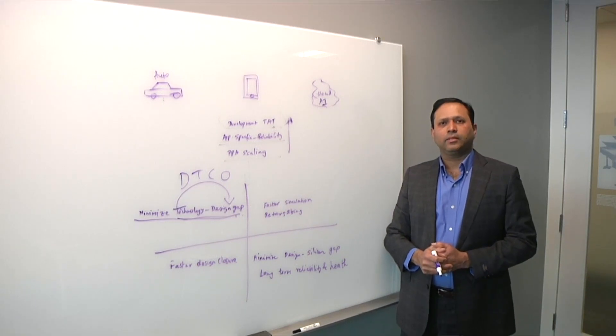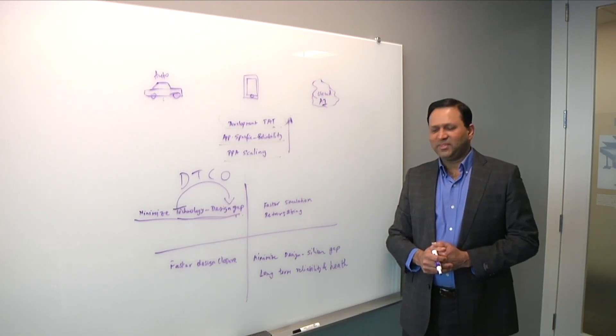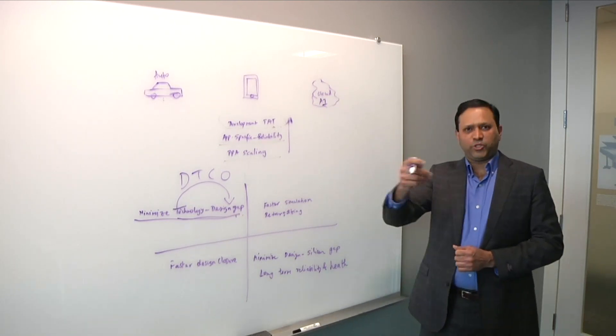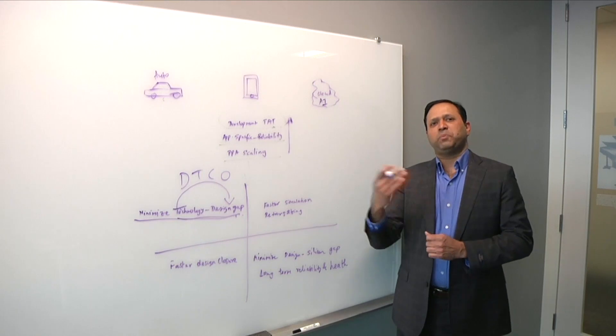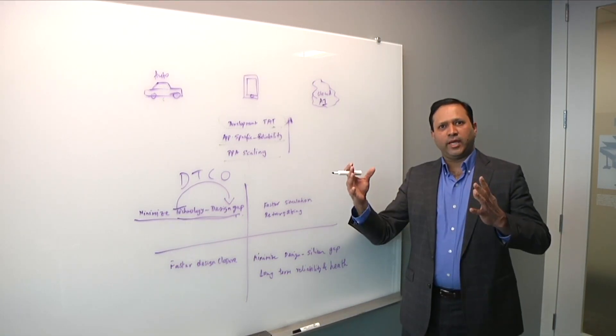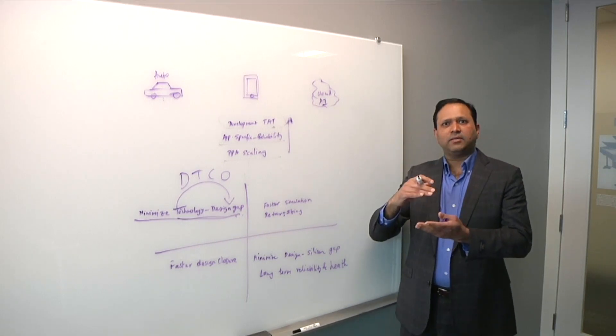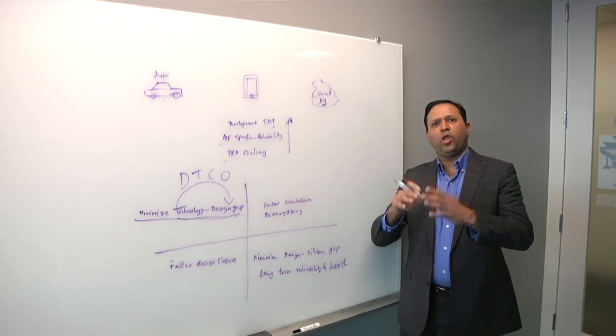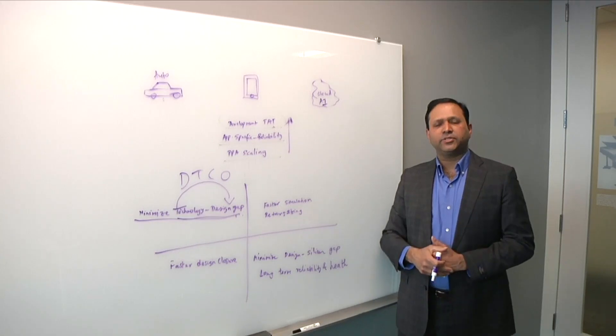And there's another level of this too, which is system technology co-optimization, where you're actually pulling in the logic and the memory, right? That is correct. So STCO, which you're referring to, is another important, especially in the context of 3D memories. How do you put together the different, the stack memories as well, as well as, to your point, logic and memory together in new emerging memory architectures.